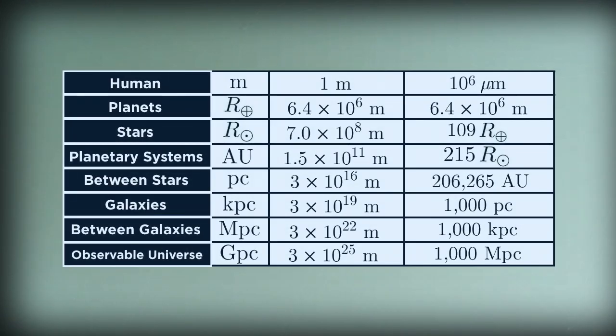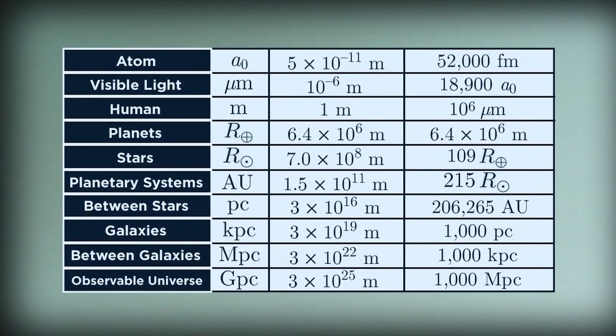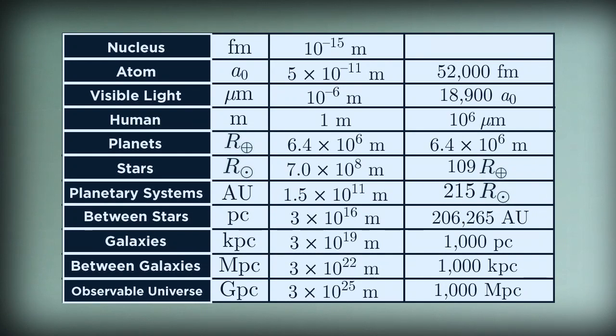Let's return now to that chart of distance scales that I made in the last lecture, which ranged from the radius of the Earth to the size of the observable universe. We'll add the three key units that we discussed during our zoom in. We have the micron, a millionth of a meter, same order of magnitude as the wavelength of visible light. We have the Bohr radius, 5 times 10 to the minus 11 meters, that's the atomic scale. And we have the femtometer, 10 to the minus 15 meters, the nuclear scale.